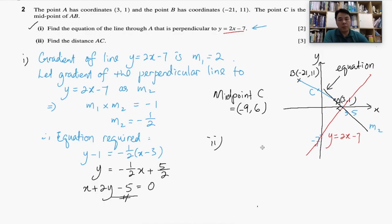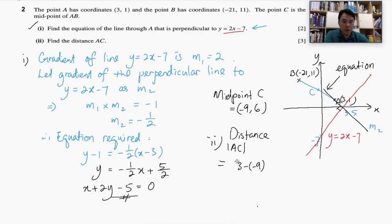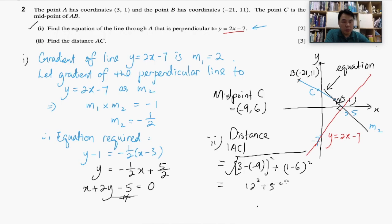We apply the Pythagorean theorem to get the distance AC. Distance AC = √((3 − (−9))² + (1 − 6)²) = √(12² + 5²) = √(144 + 25) = √169 = 13. So the distance AC is 13 units. That concludes our second section. I hope that is clear to everyone.